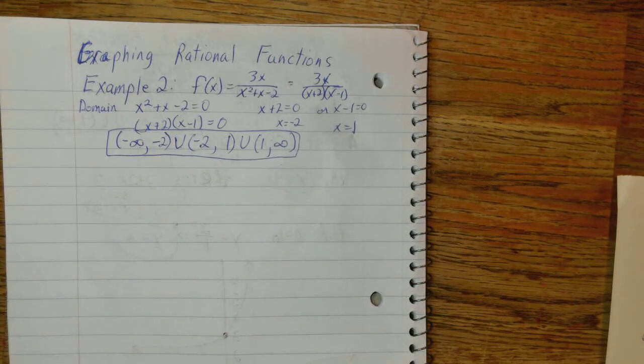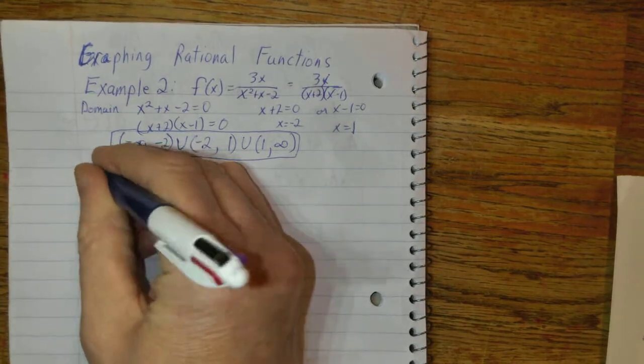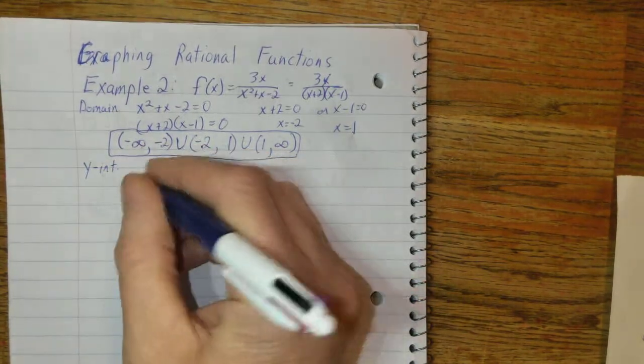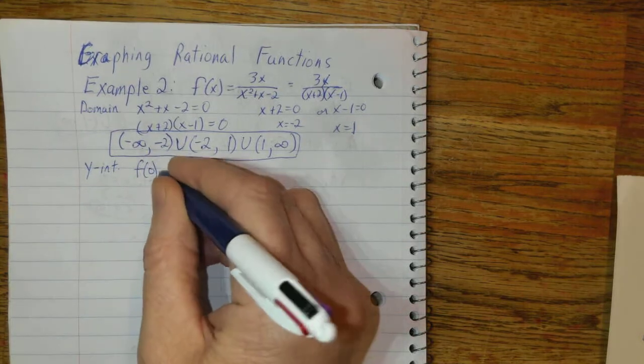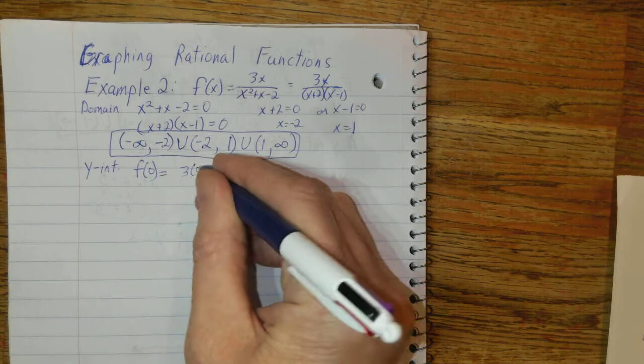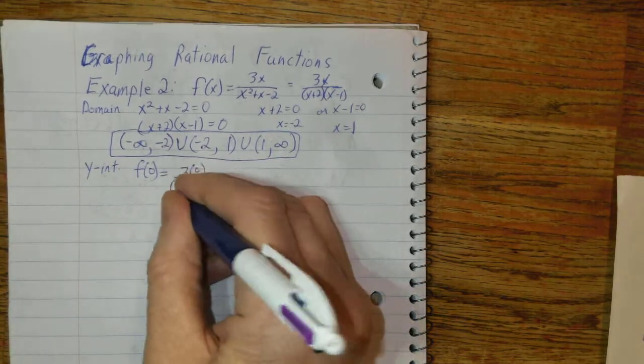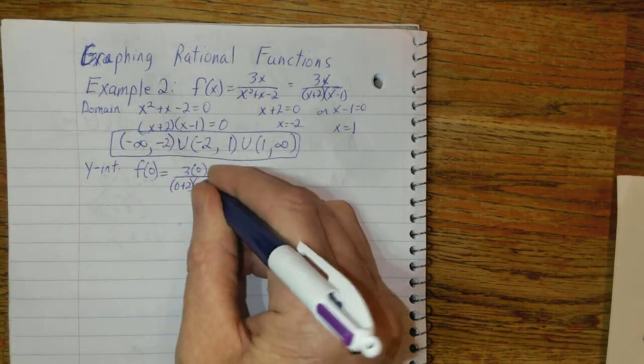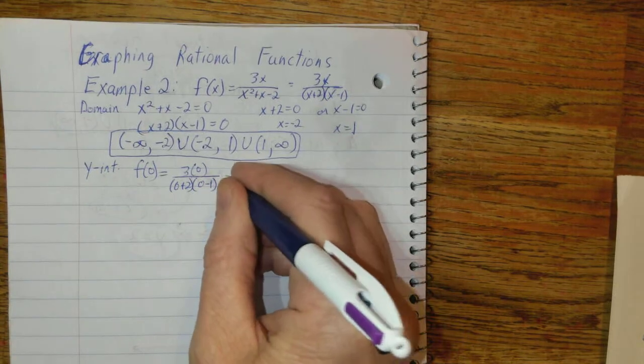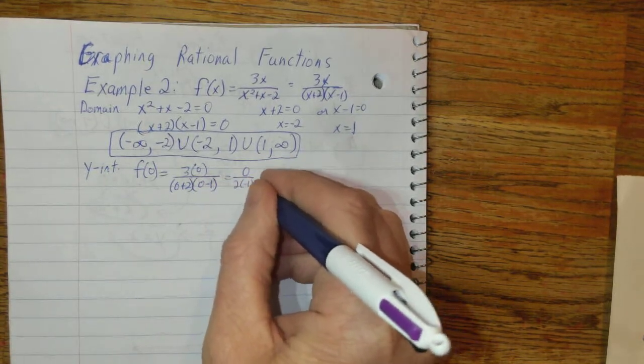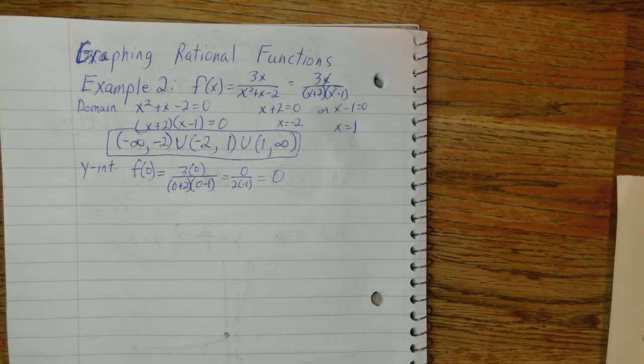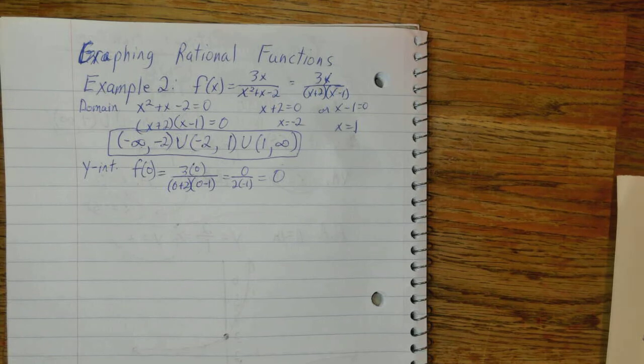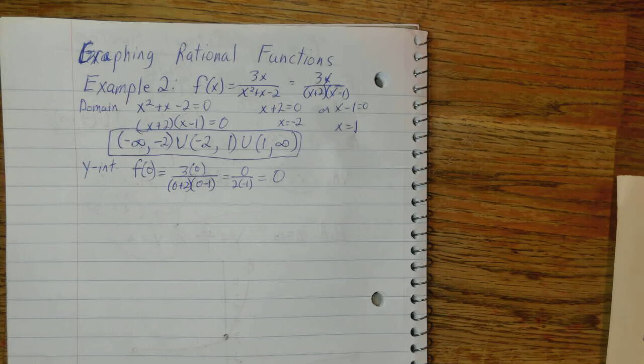Now, next step is the y-intercept. And we get the y-intercept by finding f of 0. So, I'm going to use the factored form when I'm doing my calculations, I think. 0 plus 2 times 0 minus 1. And that's 0 over 2 times negative 1, whatever that is. So, the y-intercept is 0. So it goes through the origin.